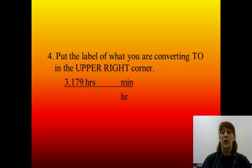Put the label of what you're converting to in the upper right corner. So, we want to go from hours to minutes, so we're going to put the minutes in the upper right corner. You see it labeled right here. So, we have 3.179 hours upper left. We took the hours and we copied them down to the lower right. And what we want to change to is put up right above that.